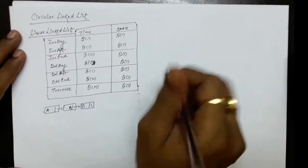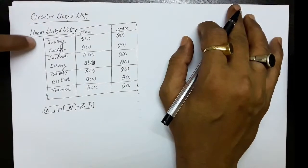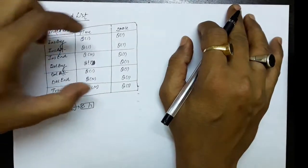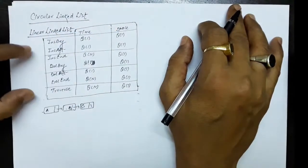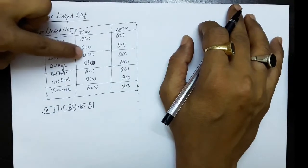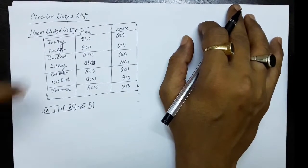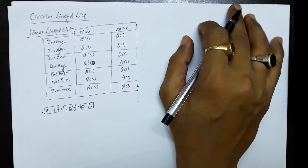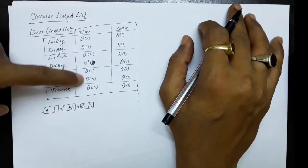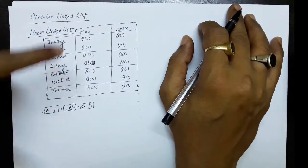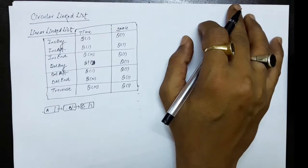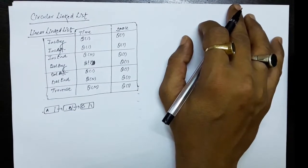Another thing is that if we list out the time and space complexity of various operations on the linear linked list, the insert end operation requires theta(n) time and delete end operation requires theta(n) time. The rest of the operations require theta(1) time. So if we are able to reduce theta(n) to theta(1), that will be a great achievement.